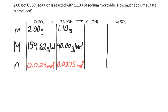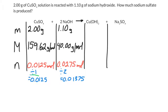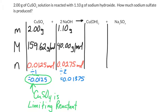So which one gets used up first? Look at the coefficients: 1 and 2. Divide the copper sulfate moles by 1 and the sodium hydroxide moles by 2. That gives 0.0125 for copper sulfate and 0.01375 for sodium hydroxide. The smaller number is copper sulfate's, so CuSO₄ is the limiting reactant, and I'm going to use its mole amount in my calculation.